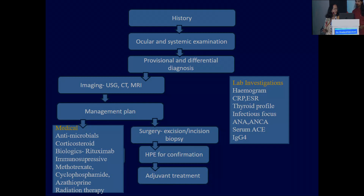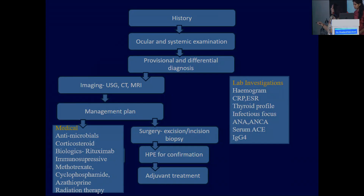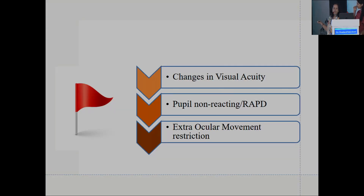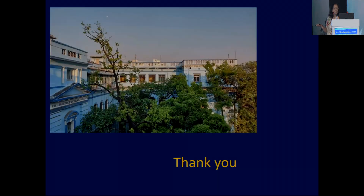Treatment plan includes antimicrobials, corticosteroids, and biologics. Rituximab is a very good tool in our armamentarium. Methotrexate and cyclophosphamide have a lot of complications, but rituximab is a better drug and we are getting good responses. Changes in visual acuity are the red flags. Remember that the orbit is actually a Pandora's box — anything can come out finally. Keep a good rapport with all the multidisciplinary specialty departments. These are my references. Thank you.